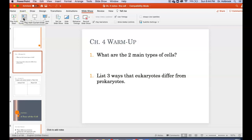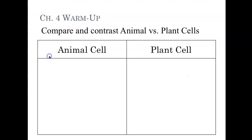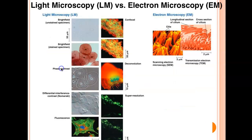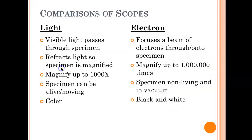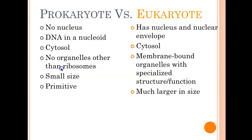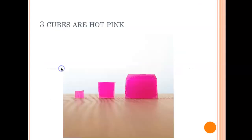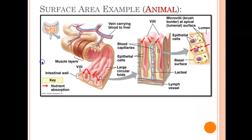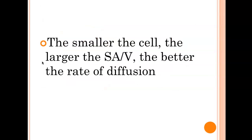I'm on test review number one, and it's talking about surface area, volume, and how that relates to the efficiency of a cell. I'm not asking you about electron microscopes or anything. You do need to know prokaryotes and eukaryotes. Okay, the smaller the cell, the larger the surface area to volume ratio, the better the rate of diffusion.